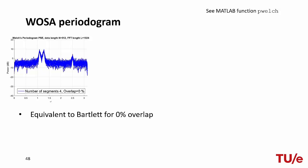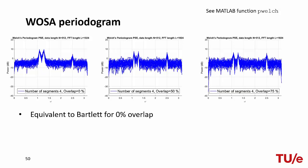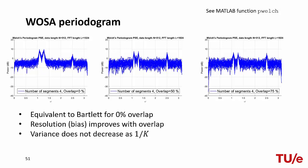When we allow overlap between segments, starting from four segments with 50% overlap, we observe a small increase in spectral resolution at the cost of a small increase in variance. Increasing overlap to 75%, the trend is similar — we further increase spectral resolution for a small increase in variance. As known from theory, the bias of the WOSA estimator improves with increasing overlap because the segment length is virtually increased, but because the averaged periodograms are no longer independent, the variance does not scale with 1 over K.